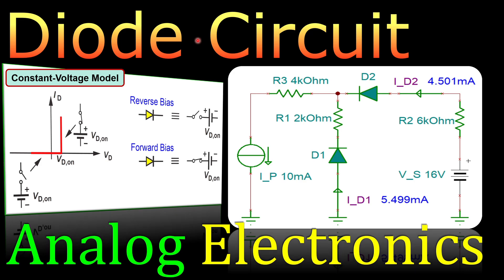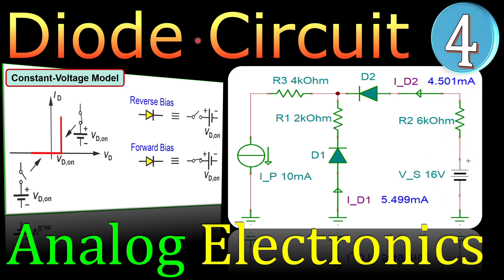Greetings and welcome to a new video about analog electronics. We continue with our diode circuits and this is example number four. In the circuit we'll look at a circuit where we have two diodes again, but in this case we have a voltage source and a current source together.